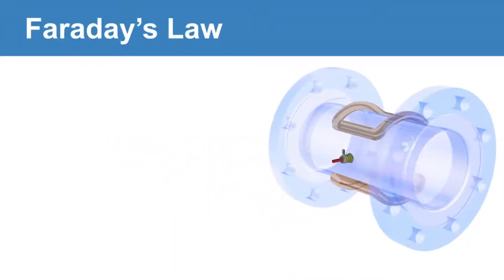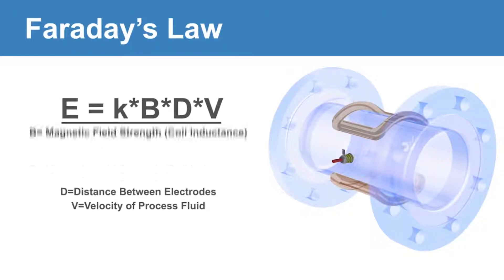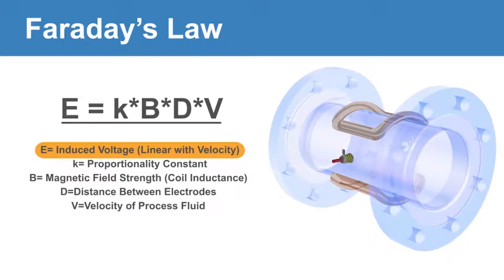This flow principle is known as Faraday's law, mathematically defined by the equation E equals K B D V, where the induced voltage, E, is directly proportional to the velocity, V, of the fluid moving through the magnetic field, B.